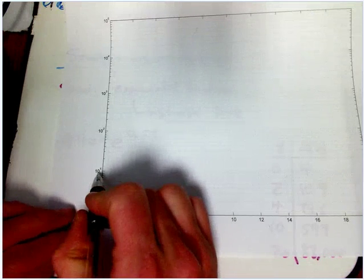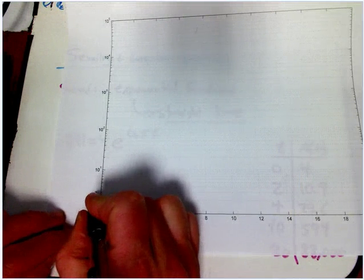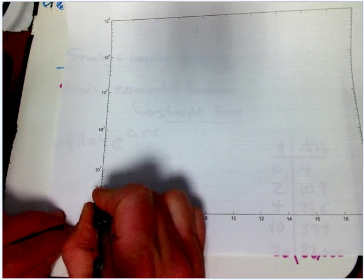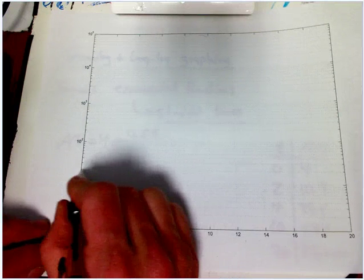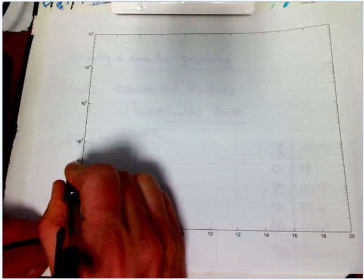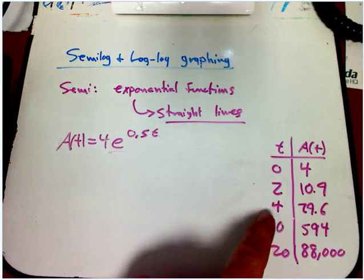We can plot the point (0, 4). So this is 10 to the 1, this is 10 to the 0, or in other words 1. This is 2, 3, 4 — and here's where we're starting at 4. Then at t equals 2, a(t) equals 10.9, just under 11. That's going to be right about here — I'll have to eyeball a little bit. This is where having the computer do it would be useful, but it's still not too bad by hand. Next, at t equals 4, a is just about 30. That one's right about here.